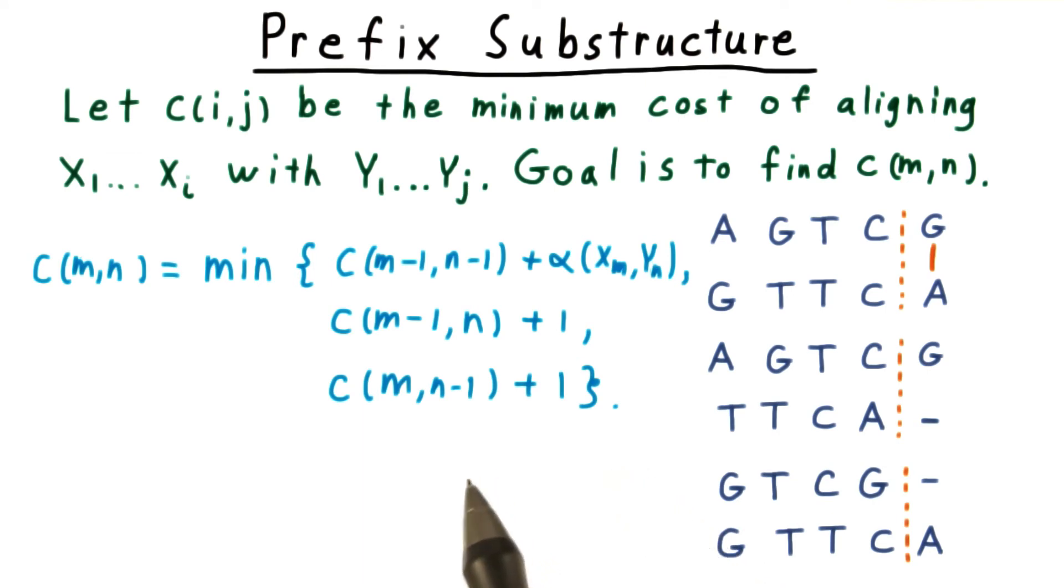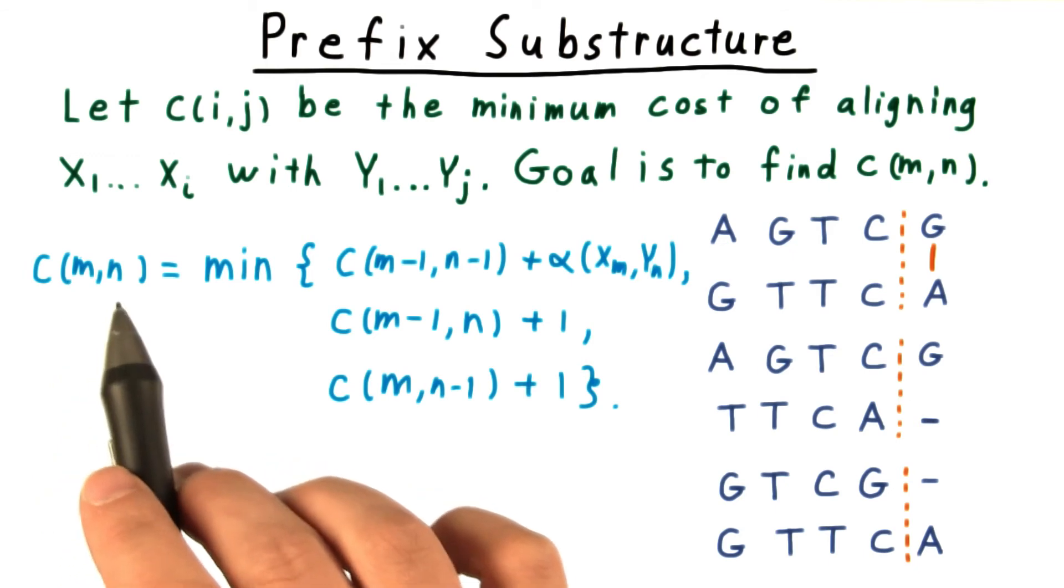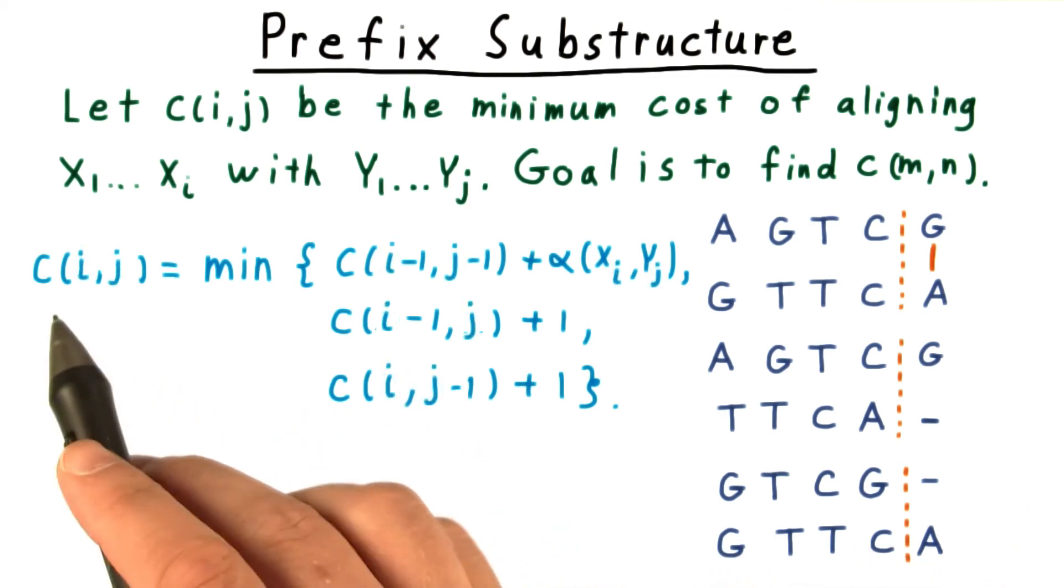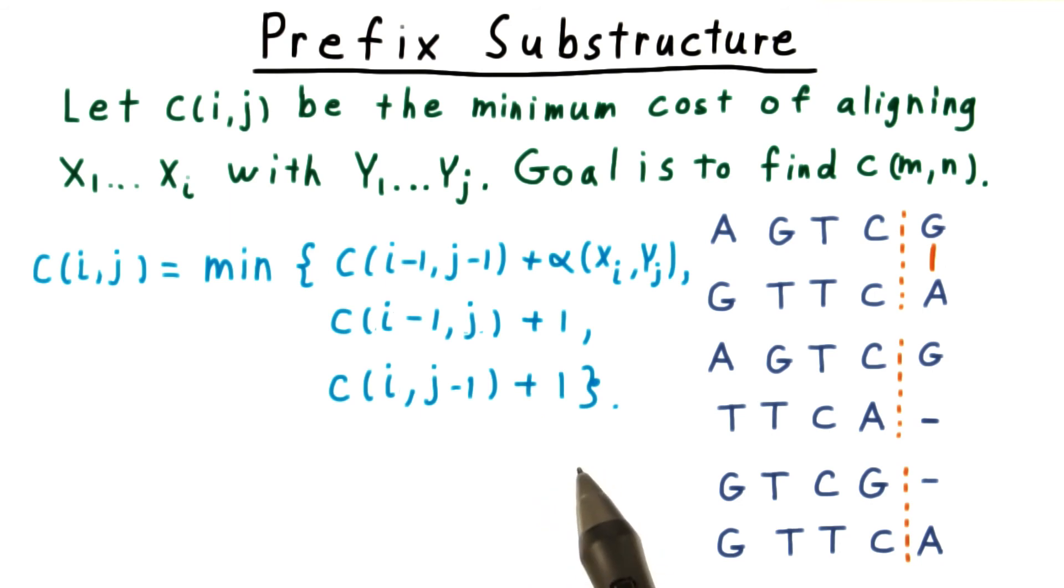Notice, however, that there was nothing special about the fact that we were using m and n here. The same argument applies to all combinations of i and j. The problems are similar, so we can replace m and n with i and j, like so.